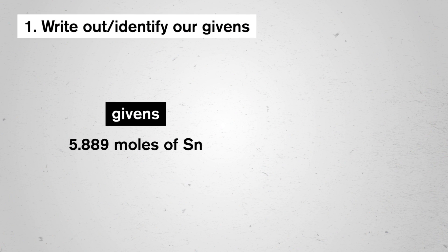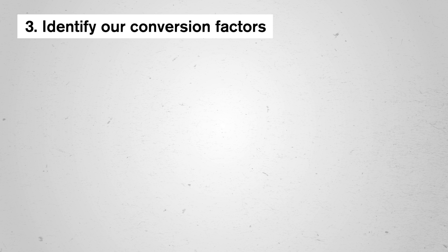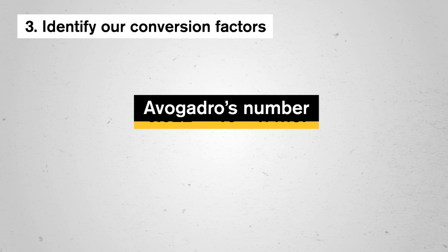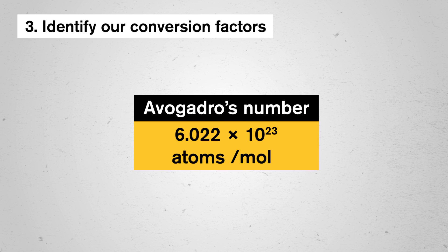Here's where we can bring back Avogadro's number. If we're trying to find the amount of atoms in 5.889 moles of tin, we lay out our steps the same way. We are given 5.889 moles of tin, and we need to find the number of atoms in that amount. Avogadro's number has the units of particles per mole — that can be atoms, molecules, or whatever else we're working with. Here, we can refer to it as atoms per mole, and it accounts for both the units we currently have and the units we need.